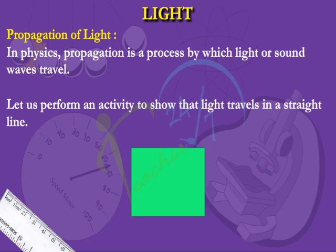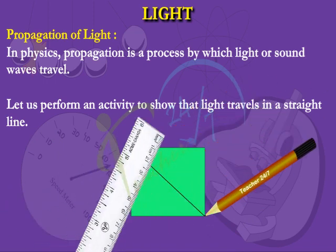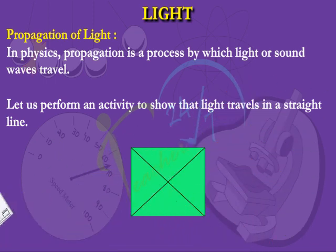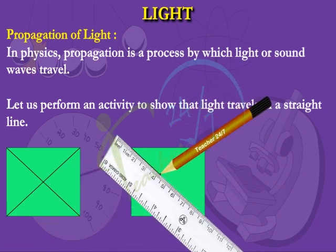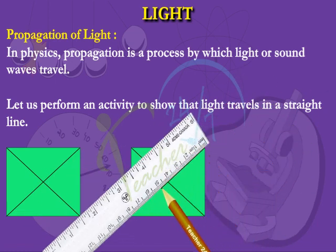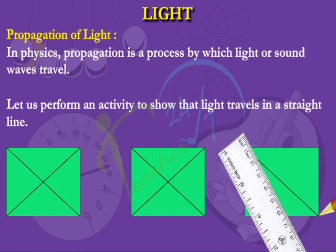Procedure. Use the ruler to draw diagonal lines connecting the opposite corners of the index card to determine the middle. Repeat for all three cards.